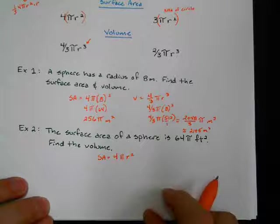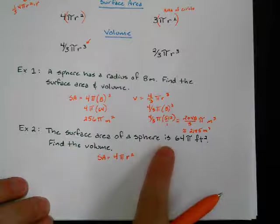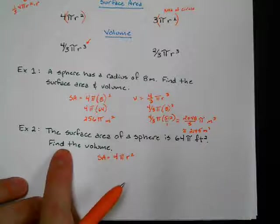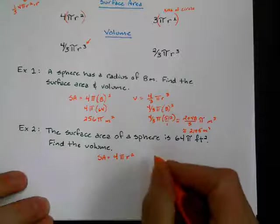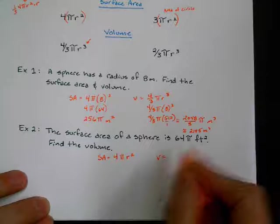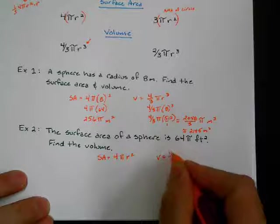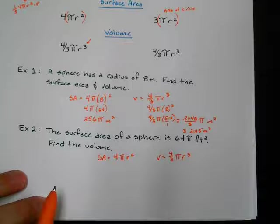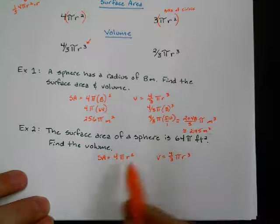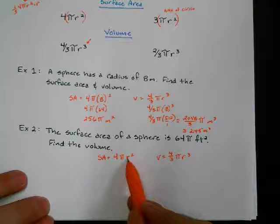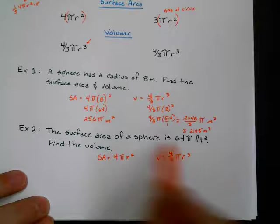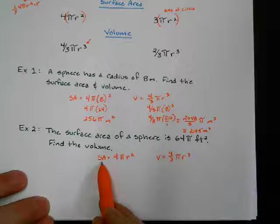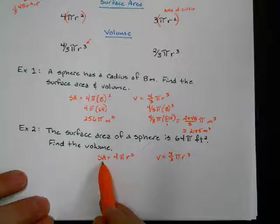So this one says that the surface area is 64π, but I want to find the volume. Volume is 4/3πr³. Now, again, the only thing we need in either one of these equations is r. So they're starting us off on surface area, so I can use this, plug it in for surface area, and solve for r. And then once I know what r is, I can plug it into this equation over here.